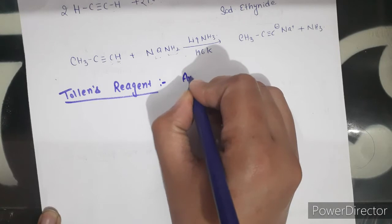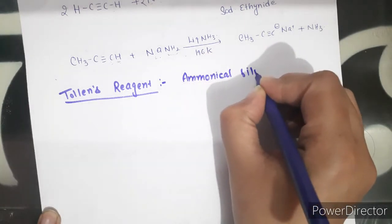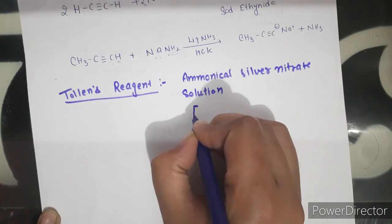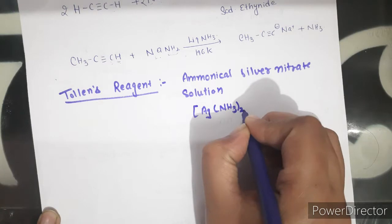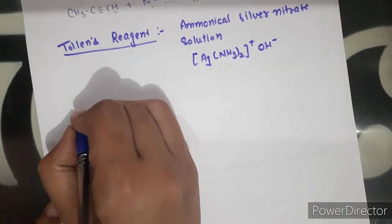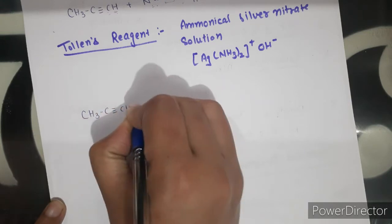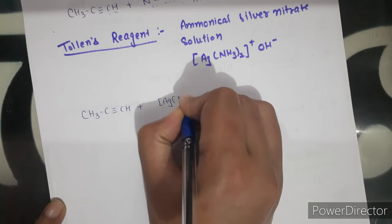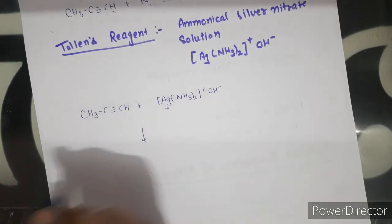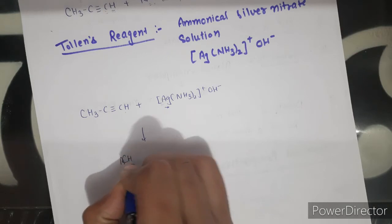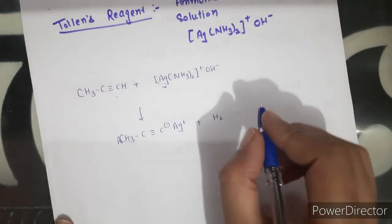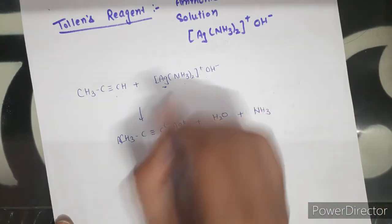Tollen's reagent is an ammoniacal silver nitrate solution, formalized as Ag(NH₃)₂⁺ OH⁻. When the reaction is done with Tollen's reagent, the metal silver replaces H⁺ — that is, H⁺ is replaced by Ag⁺. A hydroxide ion combines with the displaced hydrogen to produce water, and an ammonia molecule is also produced.